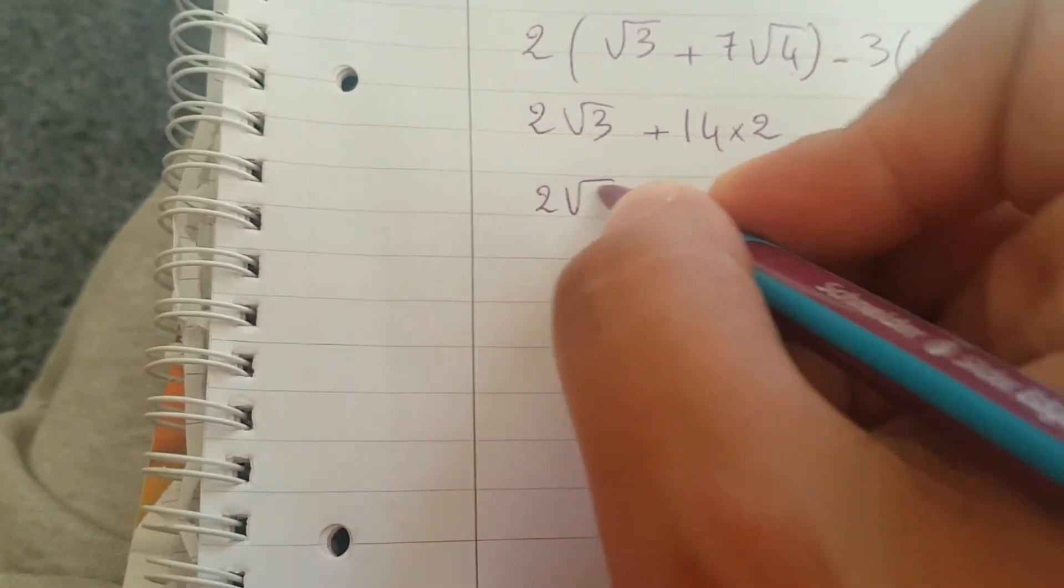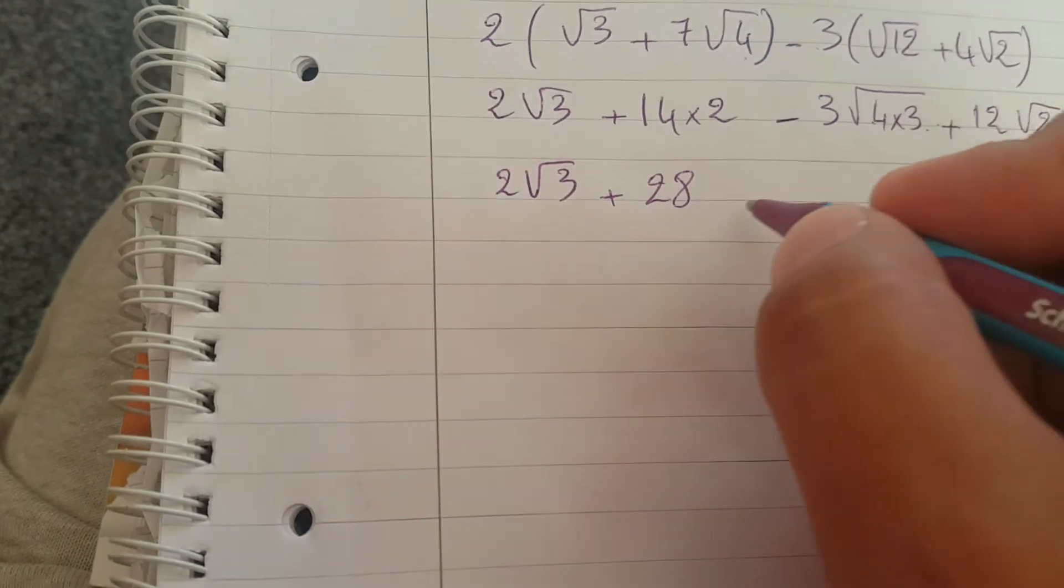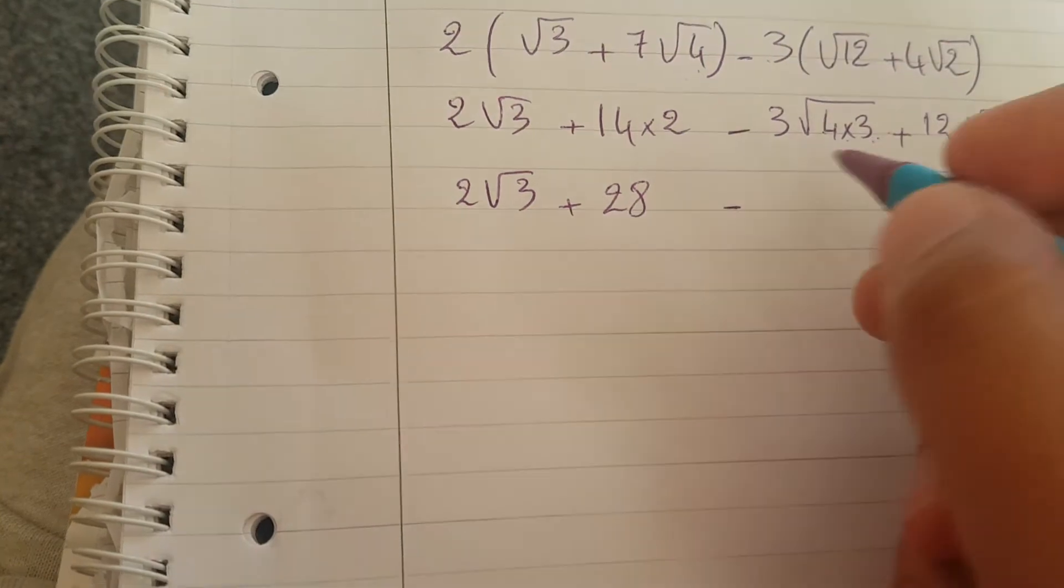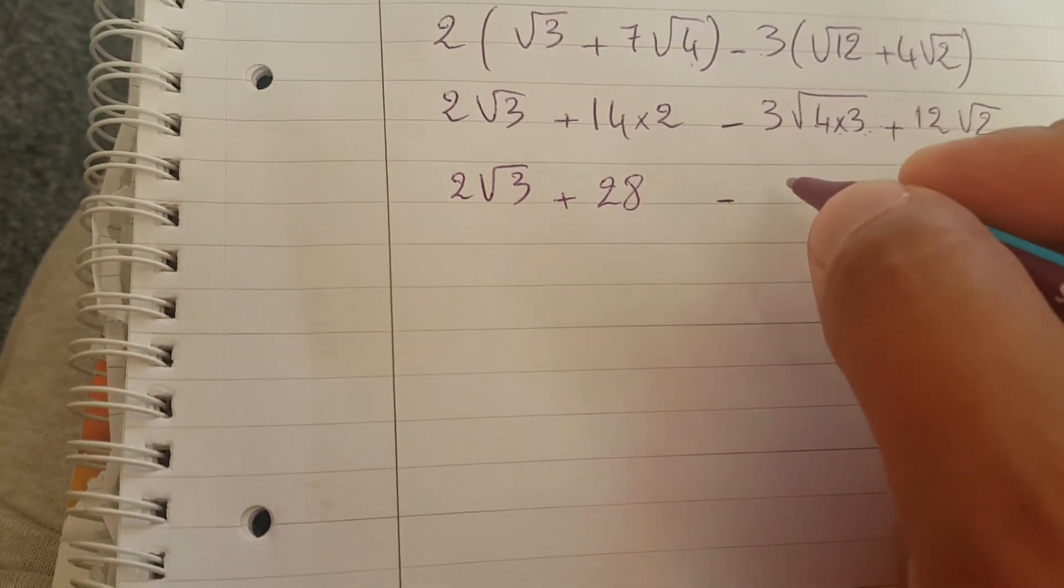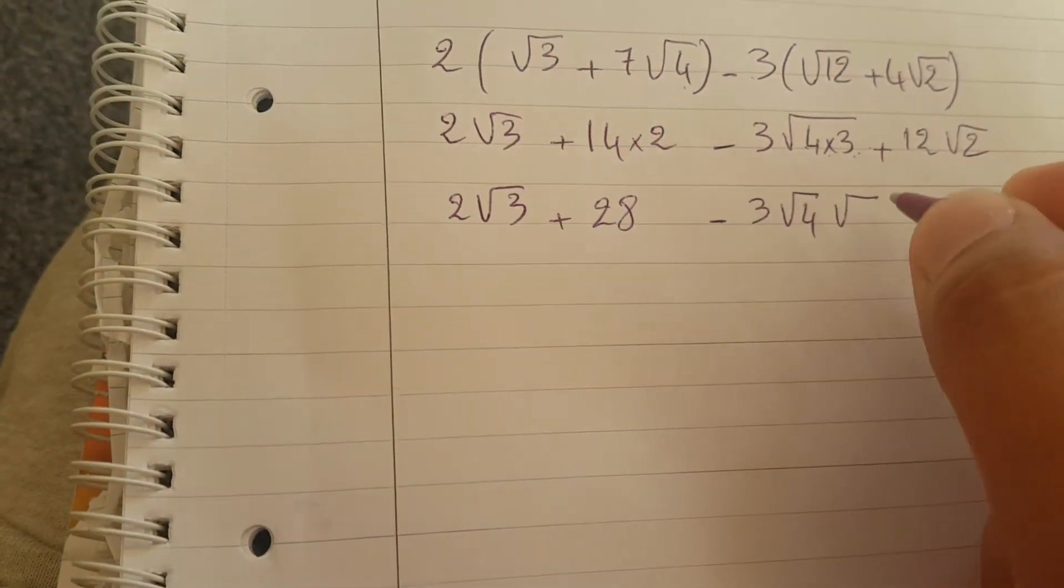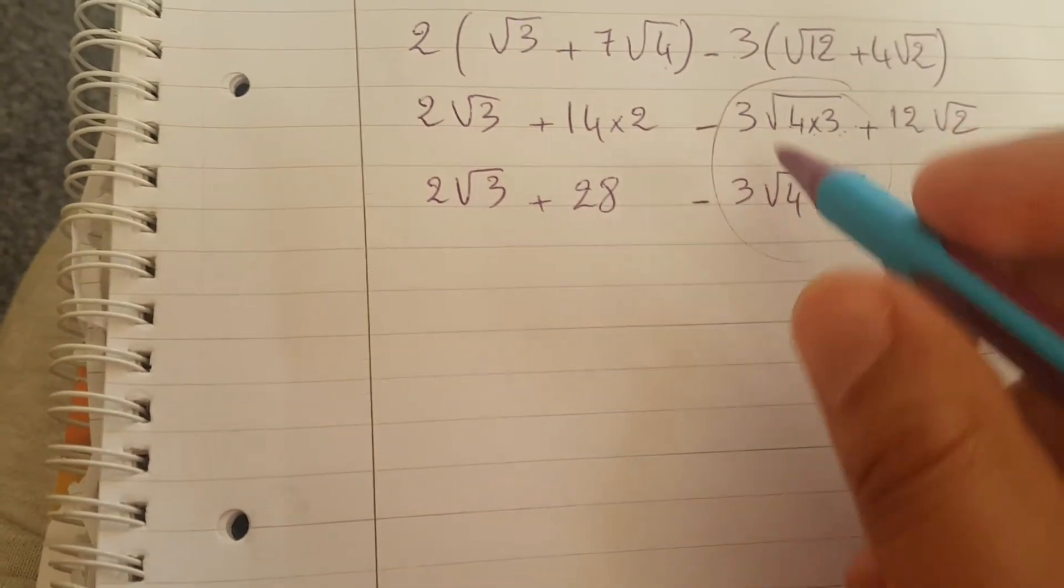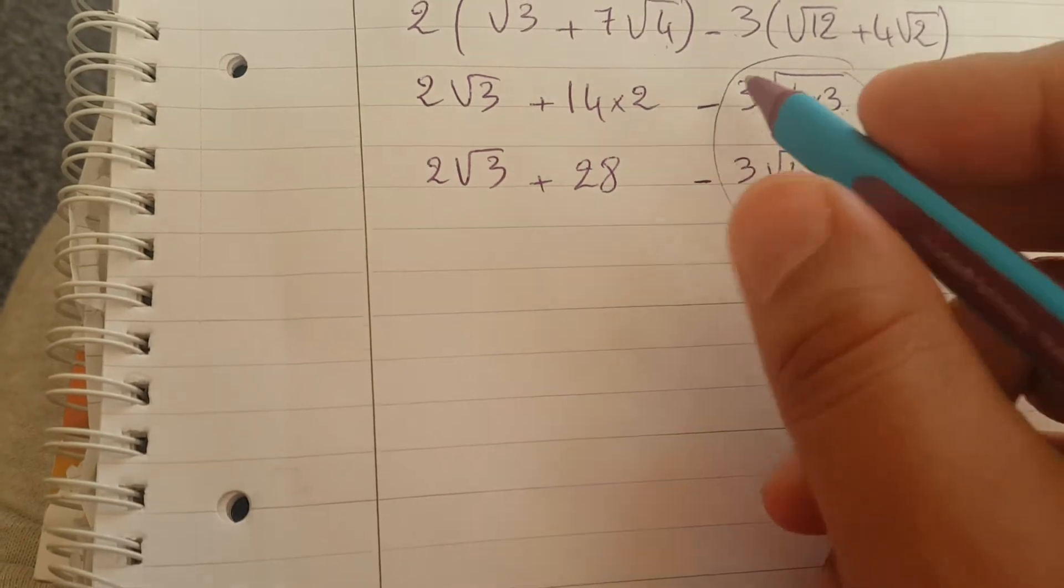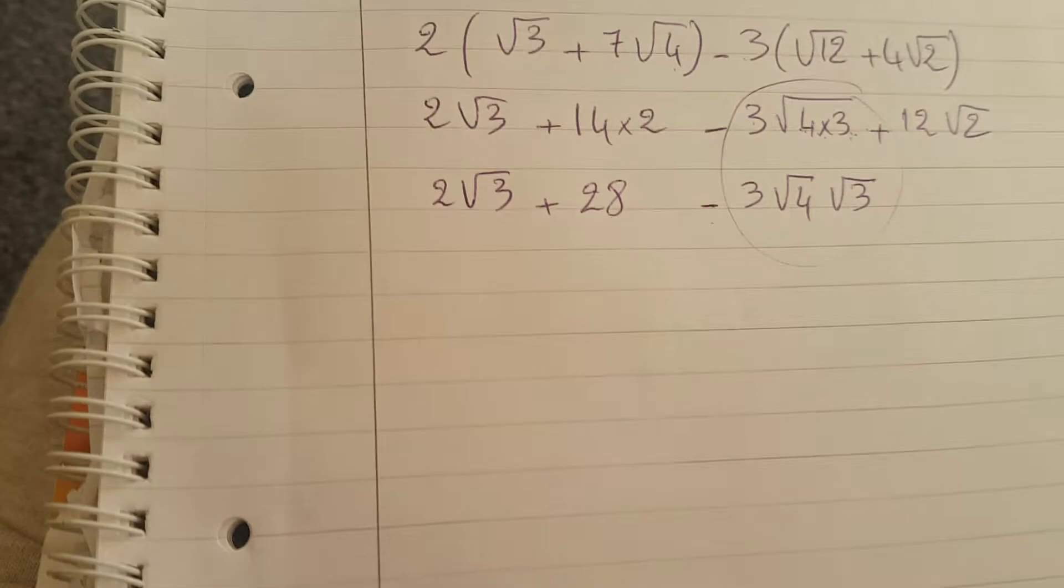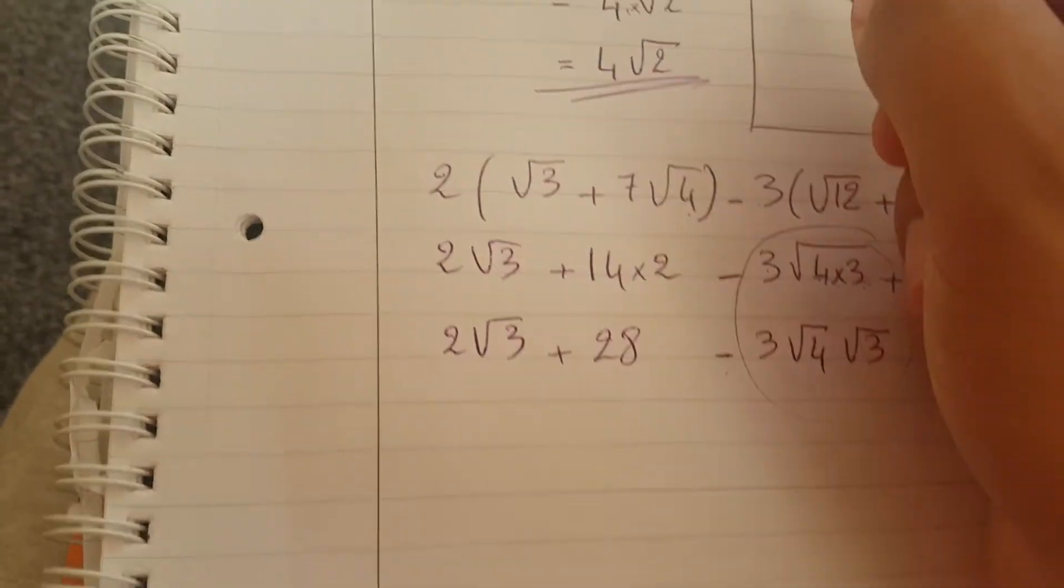Here we have two square root of three plus 28. We can split the square root of four and square root of three. We get three times - I'll do it step by step, it's easier for you - three square root of four times square root of three. Please do not do the mistake and say it's the same as... we know there's a negative there, but don't say three square root of four square root of three.